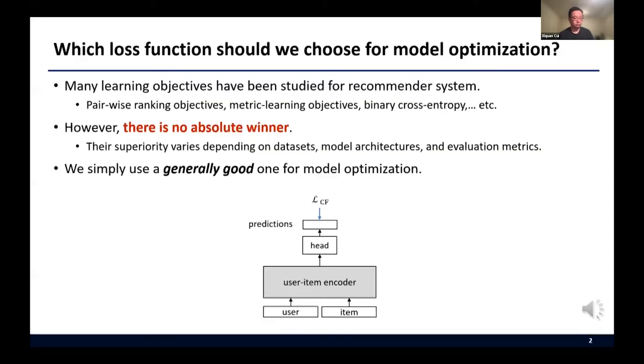This research started from a question: which loss function should we choose for model optimization? Let's say we need to train a recommendation model, and there are many choices like pairwise ranking objectives, metric learning objectives, and binary cross-entropy. The problem is there is no absolute winner. Their superiority varies depending on datasets, model architectures, and evaluation metrics. However, we don't have enough time and resources to try all of them. So we simply use a generally good one for model optimization.